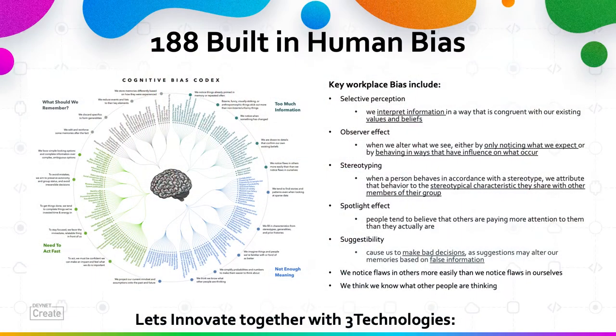Let me share a couple of ideas I've been kicking around. Let's tackle some really hard problems — something impossible to solve. How about human bias? Human beings are wired for survival, and our brains create shortcuts to speed up our decision making. Unfortunately, many of those shortcuts are flawed logic. In fact, we have about 188 of these shortcuts. We'll pick out a couple that really affect the workplace.